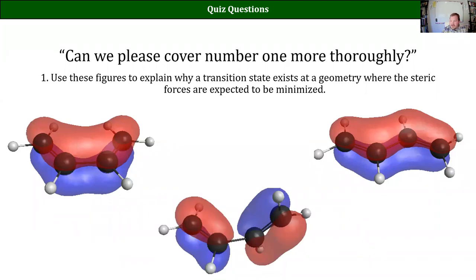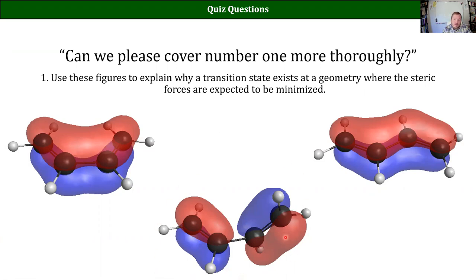So if you start as S-cis and you take those pieces that are kind of shaped as a trapezoid and rotate them up, you're going to get a transition state where you totally break the resonance, where your two pi bonds wind up being perpendicular to each other, and you can't have any resonance between those two pi bonds. That's the transition state we expect to see when S-cis rotates to form S-trans.